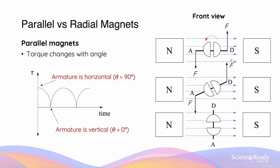Since the direction of the magnetic field remains the same, the direction of force due to the motor effect will also remain the same throughout the rotation of the armature. For example, on side A of the armature, when looking from the front of the motor, the force vector will always go downwards, and the force vector on side B will also always remain upwards. As a result of these two force vectors, that will allow for a constant torque and continuous rotation.